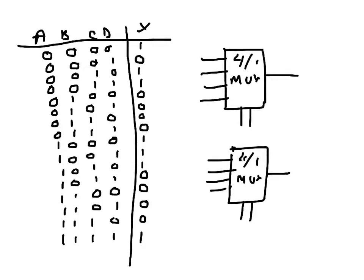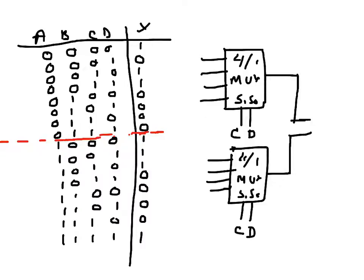I have eight inputs in total, so I will first divide the whole thing. I will apply C and D to the select pins — S1 and S0. Then I will join the outputs and connect them to the inputs of an OR gate, and here I will get the final output.